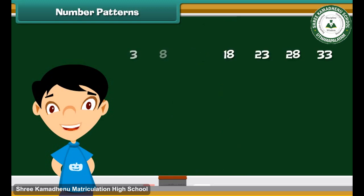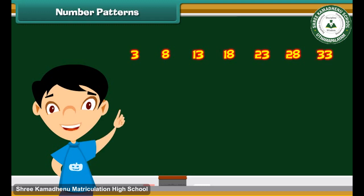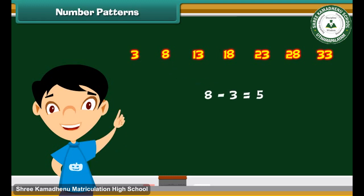Consider another series of numbers: 3, 8, 13, 18, 23, 28, 33. These numbers are also arranged in a way that the difference between two consecutive numbers is always 5.